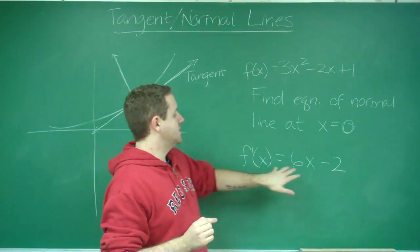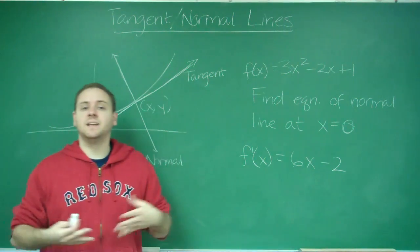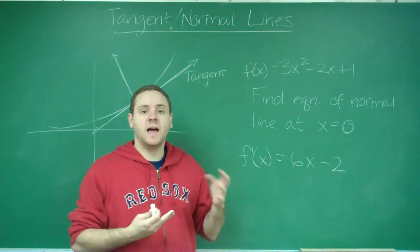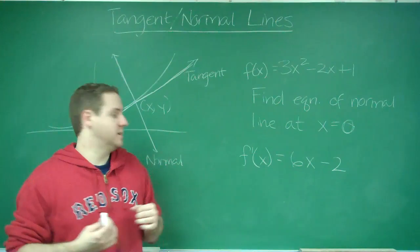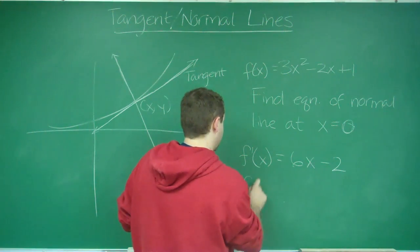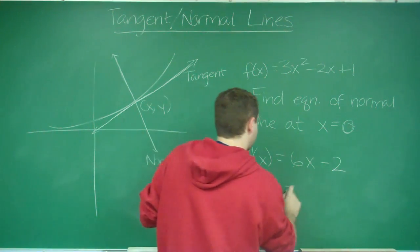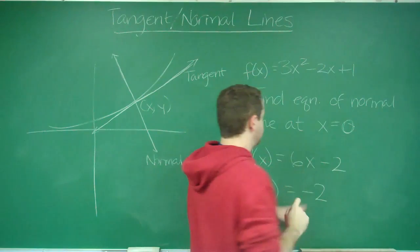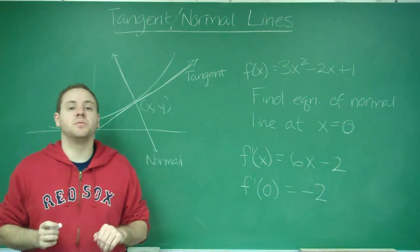This is the slope of the tangent line at any given x on this graph. Now we're told it's at x = 0, so all we need to do is plug in 0 for x. f'(0) would be -2. So -2 is the slope of our tangent line.